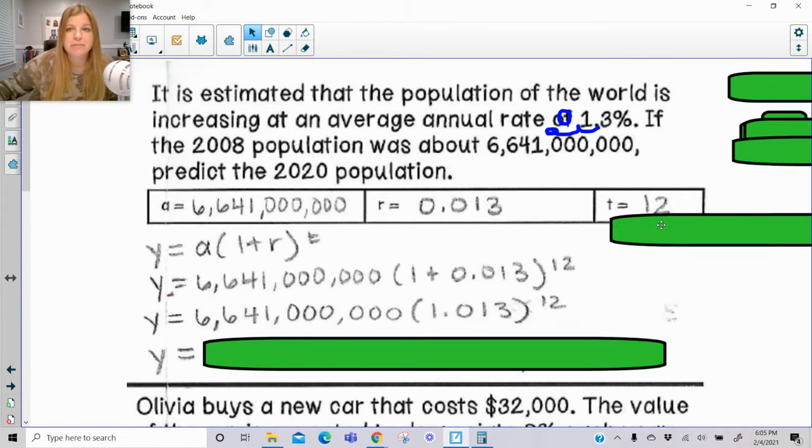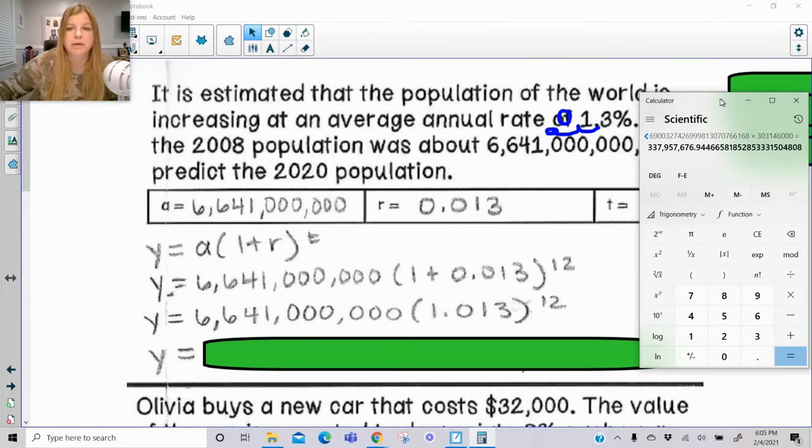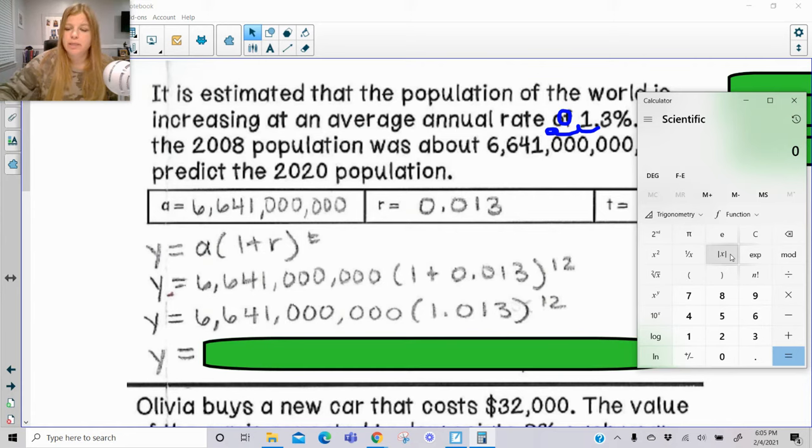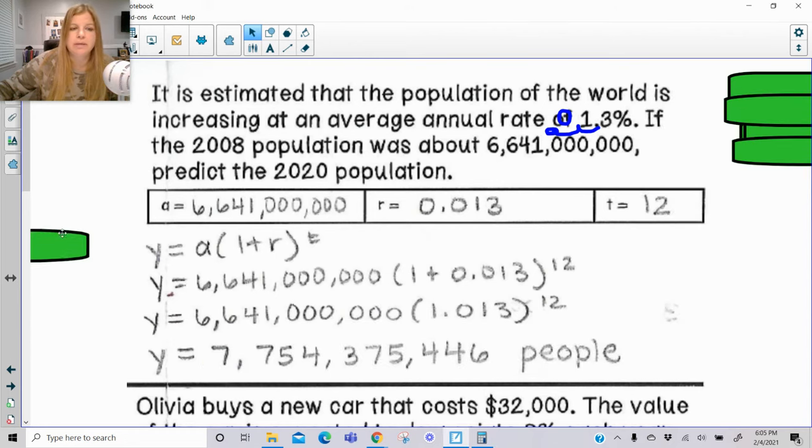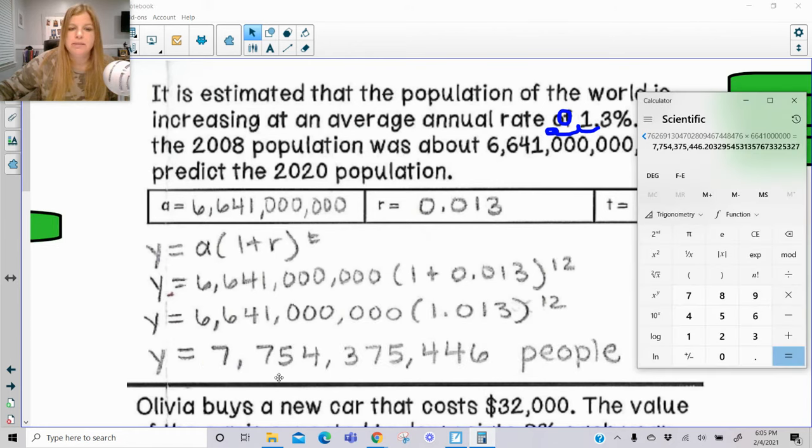What we can do is we can add the values inside of the parentheses. And then I'm going to go back to my calculator here, clear this out. So I need to do 1.013, x to the y is my exponent, 12, press enter, and then multiply that by 6,641,234,56. Press enter.